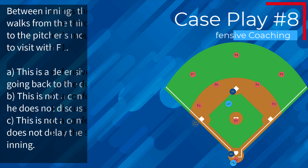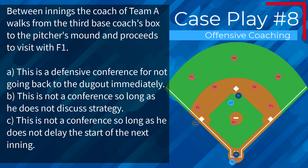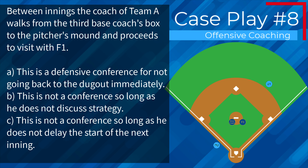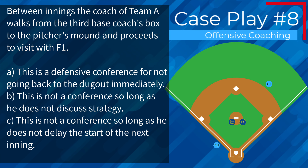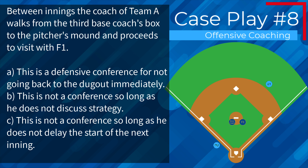Case play number eight: between innings the coach of team A walks from the third base coach's box to the pitcher's mound and proceeds to visit with F1. Is this A, a defensive conference for not going back to the dugout immediately; B, not a conference so long as he does not discuss strategy; or C, not a conference so long as he does not delay the start of the next inning?